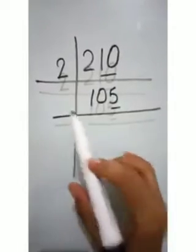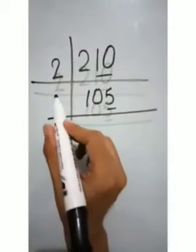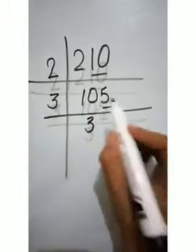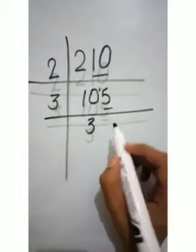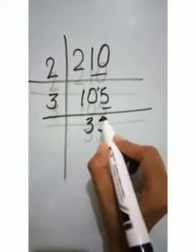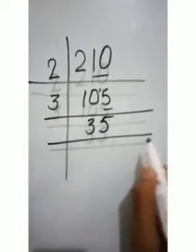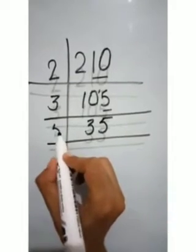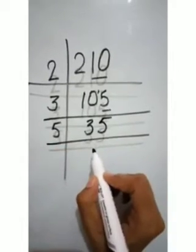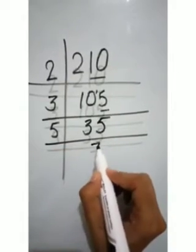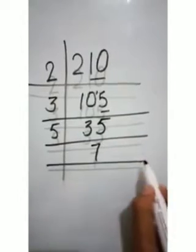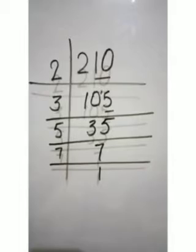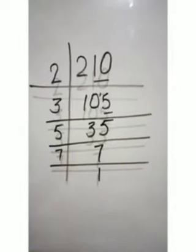3 threes are 9, 1 carry — this gives us 35. 35 is not divisible by 3, so the next prime number is 5. 5 sevens are 35, and 7 is also a prime number — 7 ones are 7. So we get the prime factors of 210 as 2, 3, 5, and 7.